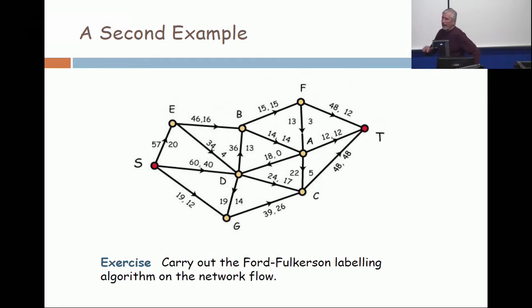Okay, now, what's the capacity of that cut? What's the capacity of that cut? So take all these vertices in L, and R just consists of F and T. What's the capacity of that cut? It's the edges which go in this direction. Fifteen and twelve is twenty-seven. Twenty-seven plus forty-eight is exactly seventy-five. And that's the current value of the flow.